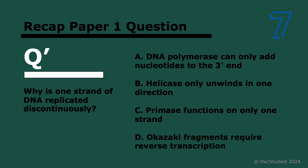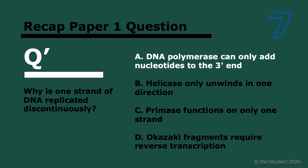Last question: why is one strand of DNA replicated discontinuously? It's because DNA polymerase can only add nucleotides to the three prime end — it works five prime to three prime — and because the two strands are anti-parallel, on one of them it can't grow continuously, so it needs to do so in chunks. Helicase moving in one direction is not the reason; if DNA polymerase could go in both directions, that would be fine. Reverse transcription — making DNA from mRNA — has nothing to do with DNA replication.